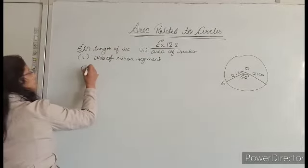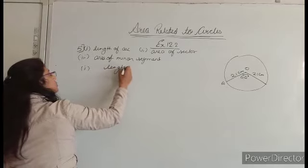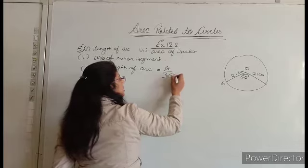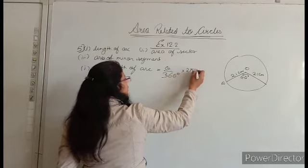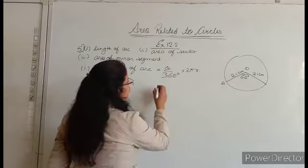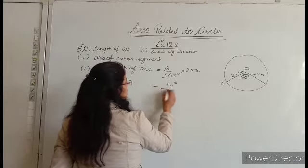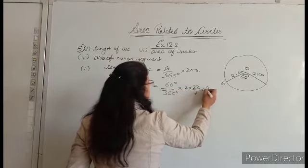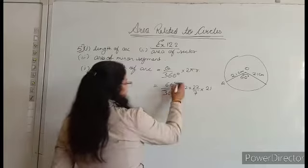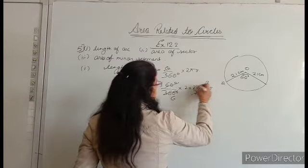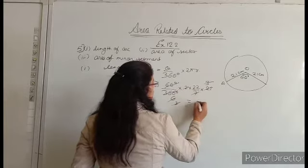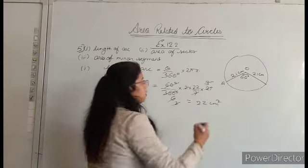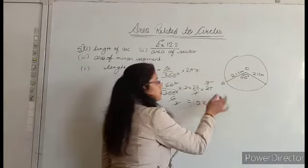Length of arc formula: theta upon 360 degree into 2 pi r. The value of pi is not given here, so we use 22 upon 7. Theta is 60 degree upon 360 degree into 2 into 22 upon 7 into 21. After cancellation, the length of arc is 22 cm.